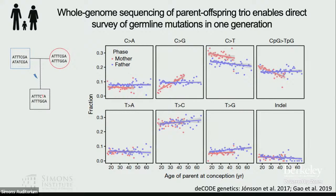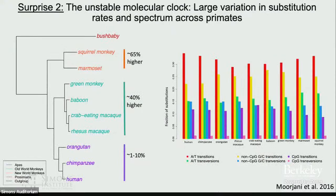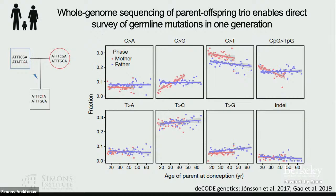Another thing we can do is divide mutations by the context in which they occur, looking at the type such as C-to-G versus C-to-A mutations, and investigate how the rate changes with parental age. Different mutation types give hints about underlying mechanisms. For CPG mutations, which primarily occur due to methylation-driven mutations, we find an increase with father's age but not mother's age. C-to-G mutations increase disproportionately with mother's age and are largely driven by double-strand breaks. So not only the mutation rate but the spectrum varies across males and females.